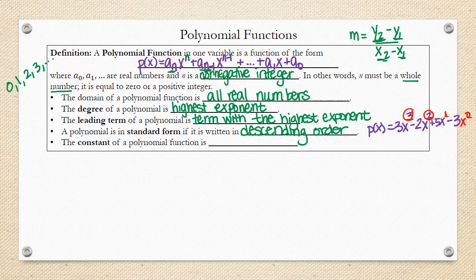The constant of a polynomial function is this value right here, a sub 0. So, remember, a constant is just a constant number. It doesn't include a variable.